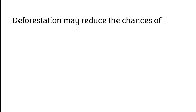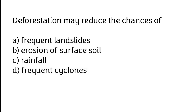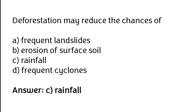Deforestation may reduce the chances of: A) Frequent landslides, B) Erosion of surface soil, C) Rainfall, D) Frequent cyclones. The correct answer is option C — deforestation may reduce the chances of rainfall.